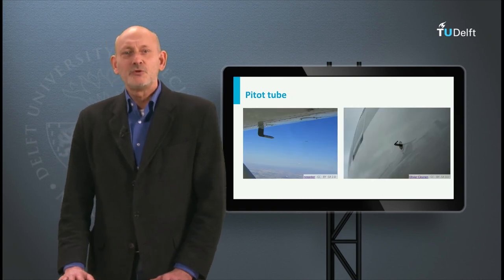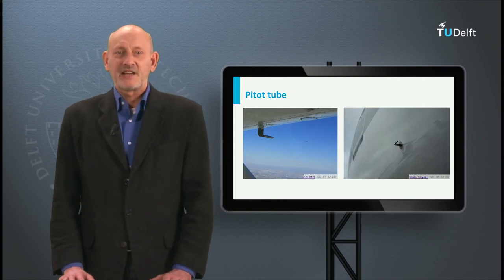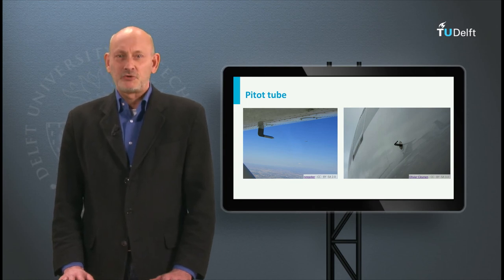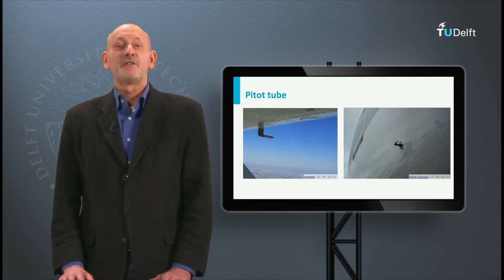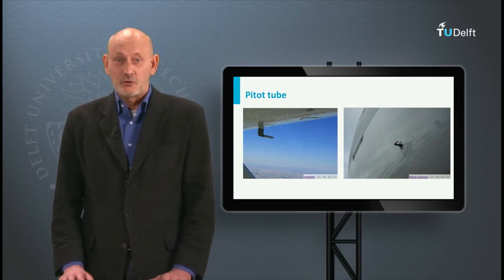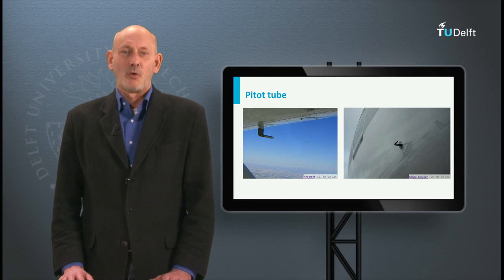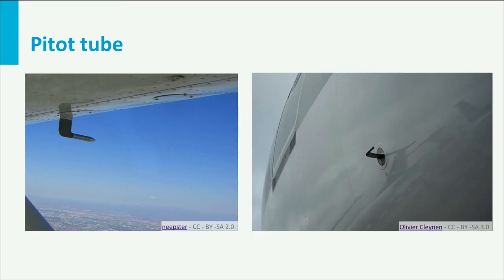Bernoulli's equation can also be used to determine flight speed in incompressible flow. For that we need a pitot tube, named after the French physicist Henri Pitot, who developed it in 1732 to determine the velocity of water in rivers. It measures the total pressure. To calculate the speed we also need the static pressure, which is measured by a static port in the fuselage.